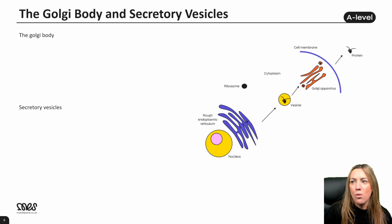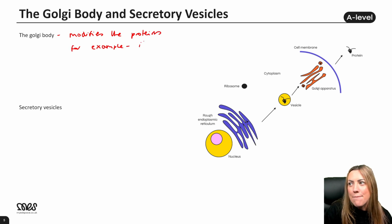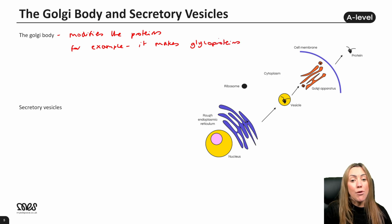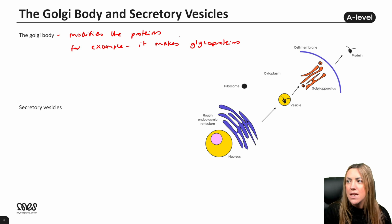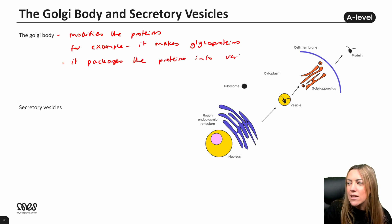The Golgi body receives the proteins from the rough ER and modifies them. For example, it makes glycoproteins — a protein with a carbohydrate chain attached — which is one example of how it modifies a protein. It then packages the proteins into vesicles.